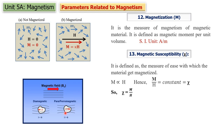Magnetization means how much the material gets magnetized, and it is denoted by M. Magnetization depends on the strength of the external magnetic field: if the strength H is greater, the material gets more magnetized. So M is directly proportional to H, and therefore M/H is constant. That constant is susceptibility, so chi equals M/H.